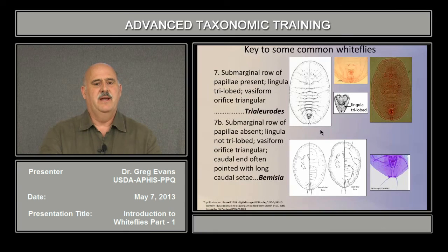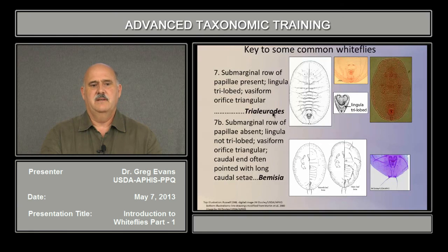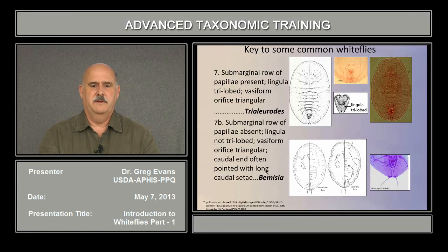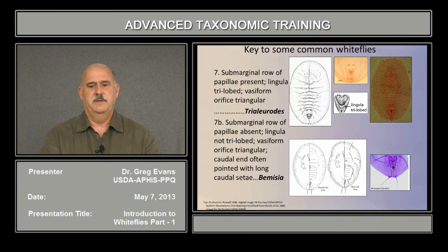These are genera that don't have tracheal pores and don't have sub-marginal furrows. Trialeurodes have a sub-marginal row of papillae along here — these are conical structures, sometimes bullet-shaped — and also the lingula in the vasiform orifice is trilobed. Whereas Bemisia is very similar except that it lacks these papillae along the side, and the lingula is spear-shaped.